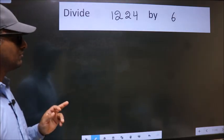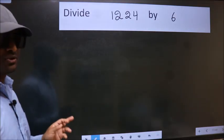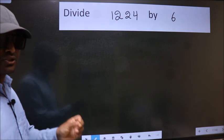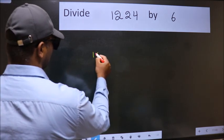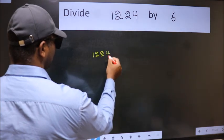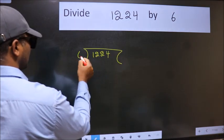Divide 1224 by 6. To do this division, we should frame it in this way. 1224 here, 6 here.